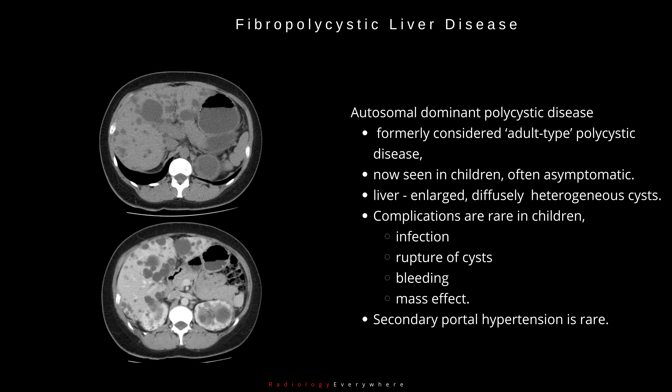Autosomal dominant polycystic disease, previously termed adult-type polycystic disease, is now recognised in children, who are often asymptomatic. The liver is usually enlarged and diffusely involved with heterogeneous cysts.